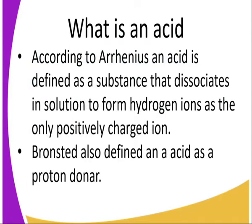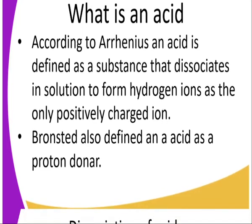So, what is an acid? According to Arrhenius, an acid is defined as a substance that dissociates in a solution to provide hydrogen ions as the only positively charged ions. Bronsted also defined an acid as a substance that donates a proton. A proton is a positively charged particle.